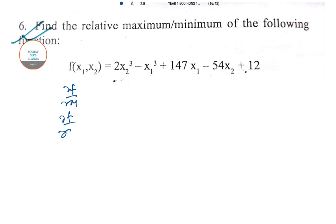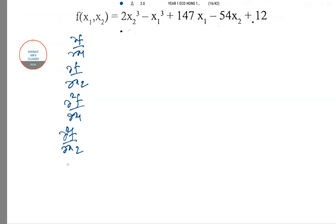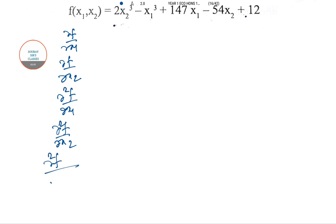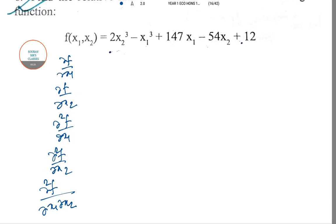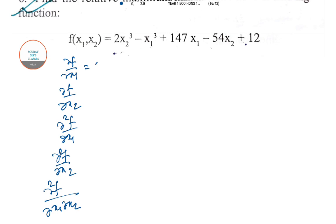So here you need to focus on this thing: you have to find del f del x1, del f del x2, del 2f del x1 squared, del 2f del x2 squared, and then del 2f del x1 del x2. It is actually the same whether you do x2 x1, and form a determinant based structure.